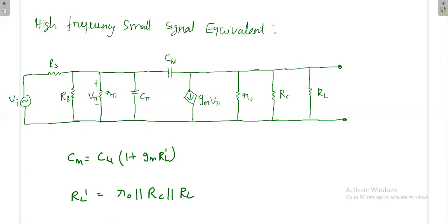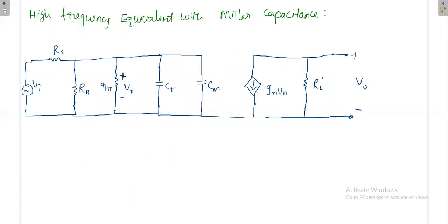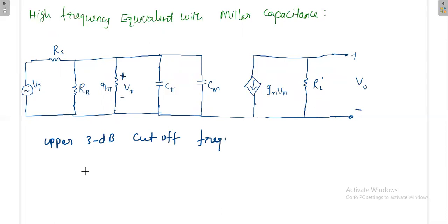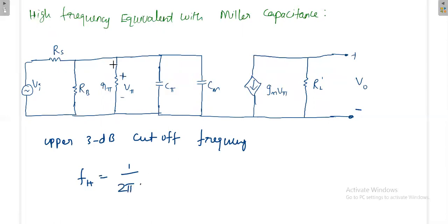We can now modify the circuit diagram so that Cmu is mapped only to the input side with the value CM, while the rest of the components remain the same. The upper 3dB cutoff frequency fH is equal to 1/(2π·τ), where τ is the time constant of the circuit at the input side. The time constant equals R-equivalent multiplied by C-equivalent.